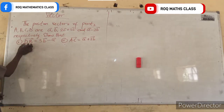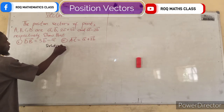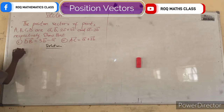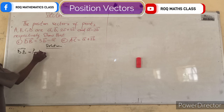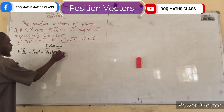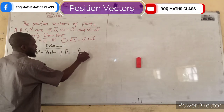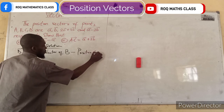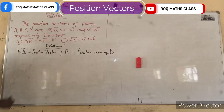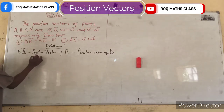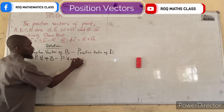We also find vector DB, that is the vector in the direction of DB. This is the same thing as position vector of B minus the position vector of D.